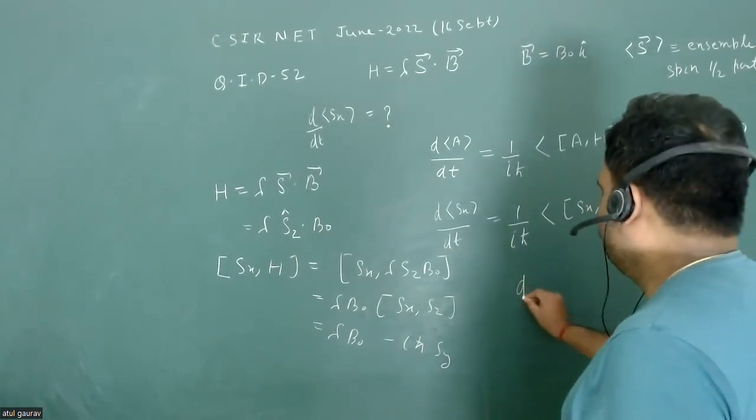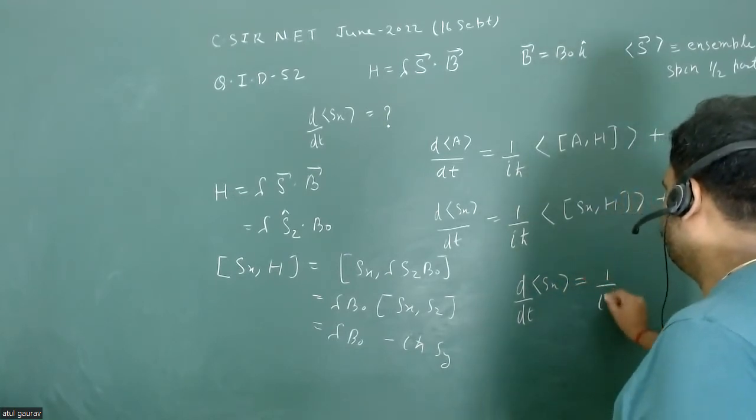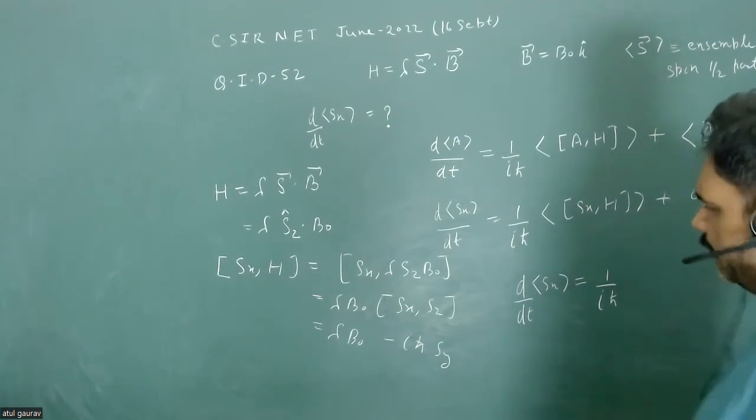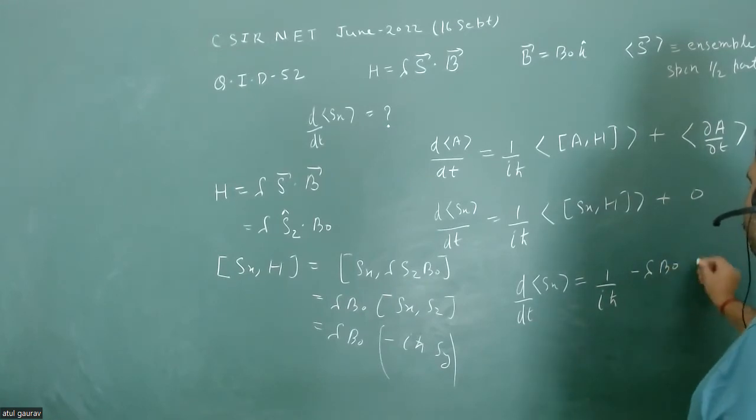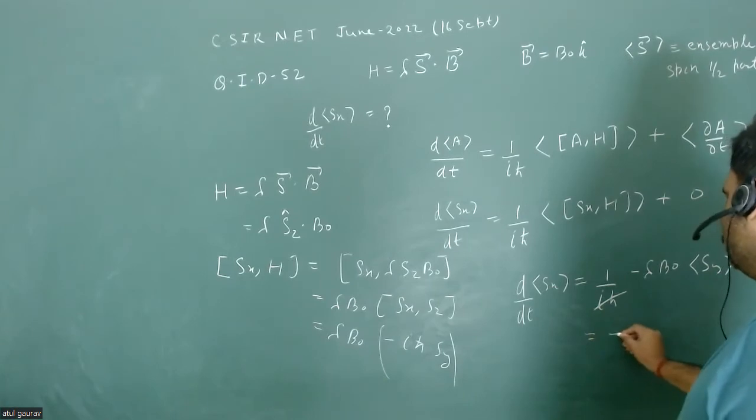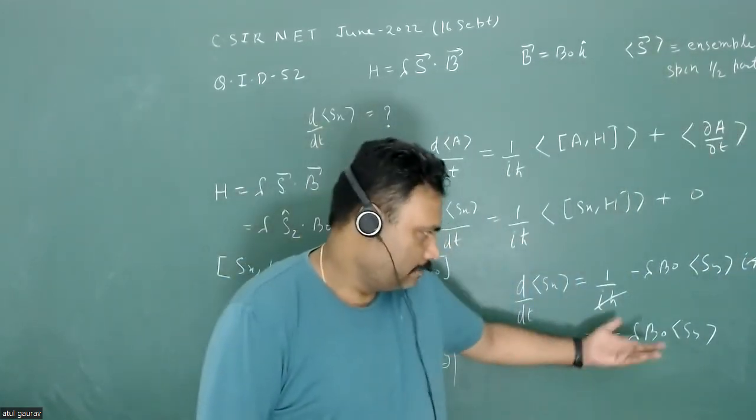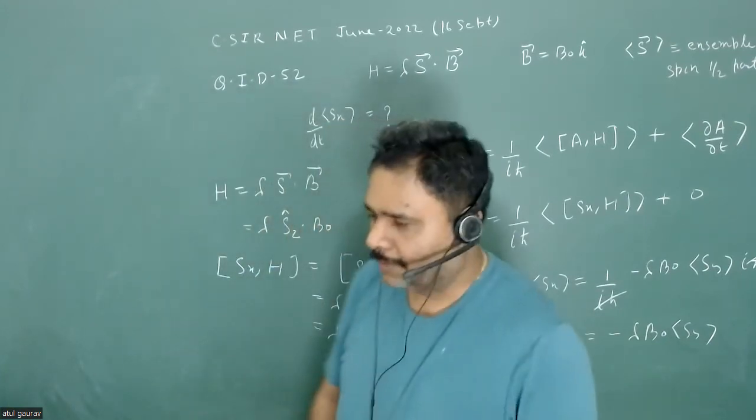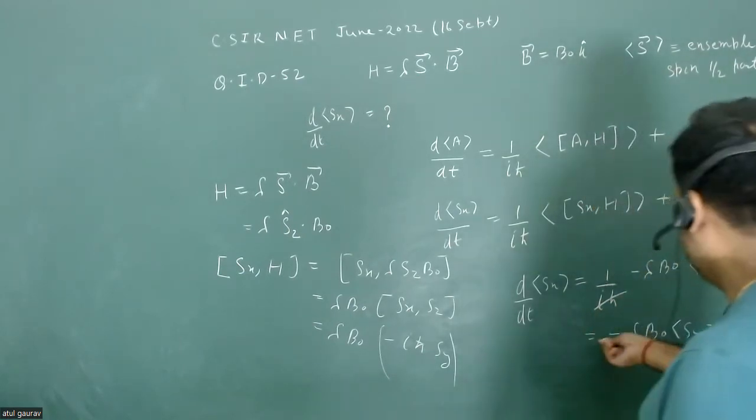So the value d upon dt expectation value of sx is equal to 1 upon ih bar times minus lambda b0 expectation value of sy, and also ih bar is there. So this ih bar and this ih bar cancel out. And we have lambda b0 sy. But in the four options, there is one h bar there. So maybe this can be some misprinting or something else. But exact answer will be lambda b0 sy, because this ih bar and this ih bar cancel out with the negative sign.